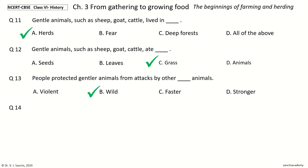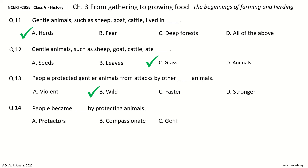Question 14. People became what by protecting animals. The options are: protectors; compassionate; gentle; herders. And the answer is herders.